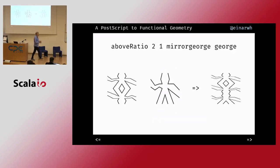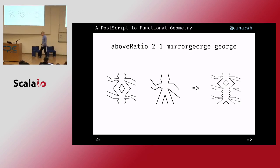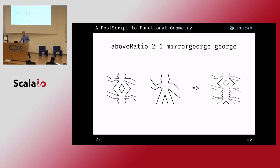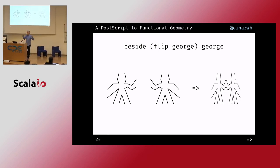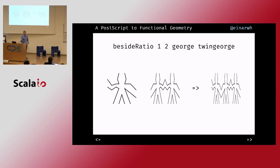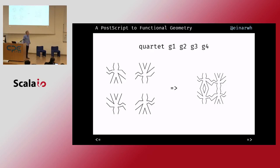One thing I might do is use the above-ratio to give a weight of two to the composed picture and a weight of one to just George. Similarly, I have a 'beside' function to combine two pictures by putting them next to each other. One more way of combining things: a quartet takes four pictures and creates a two-by-two grid.